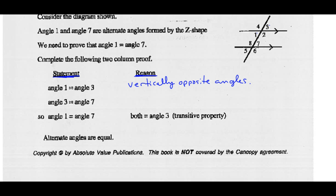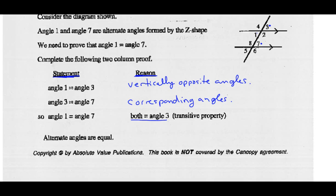Next, angle three equals angle seven — why? Because those are corresponding angles; they form the F pattern, and we've already proven that to be true. Based on these statements, if angle one equals angle three and angle three equals angle seven, then angle one must equal angle seven because they both equal angle three. That's called the transitive property — or substitution. Where I see angle three, I can plug in angle one, giving angle one equals angle seven.